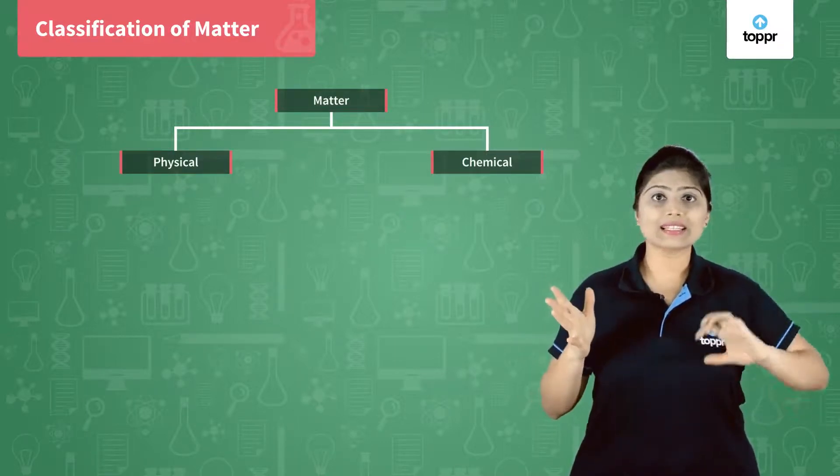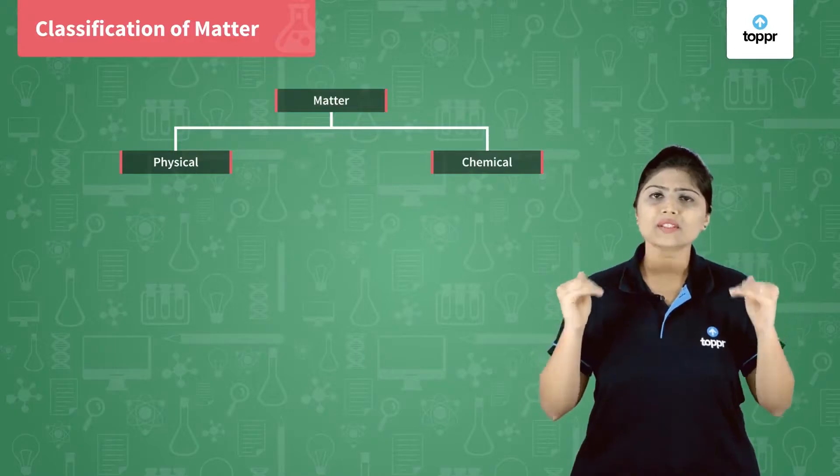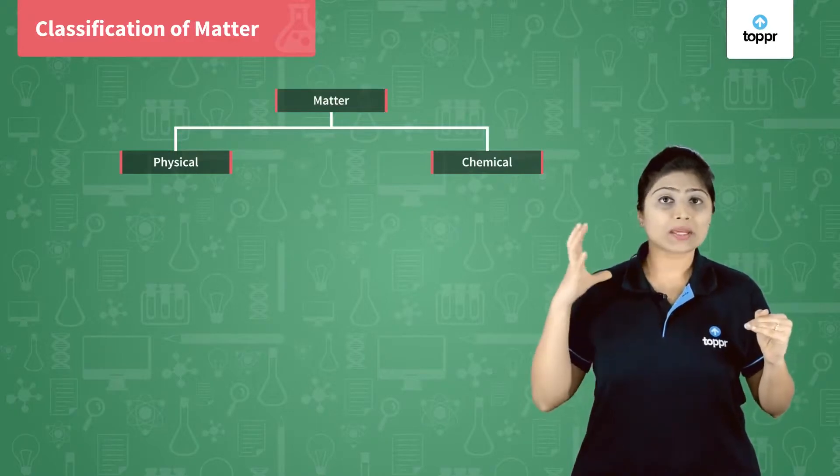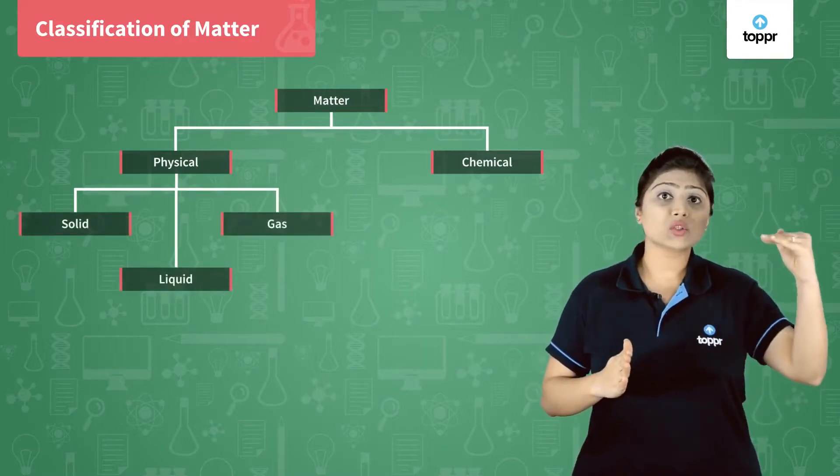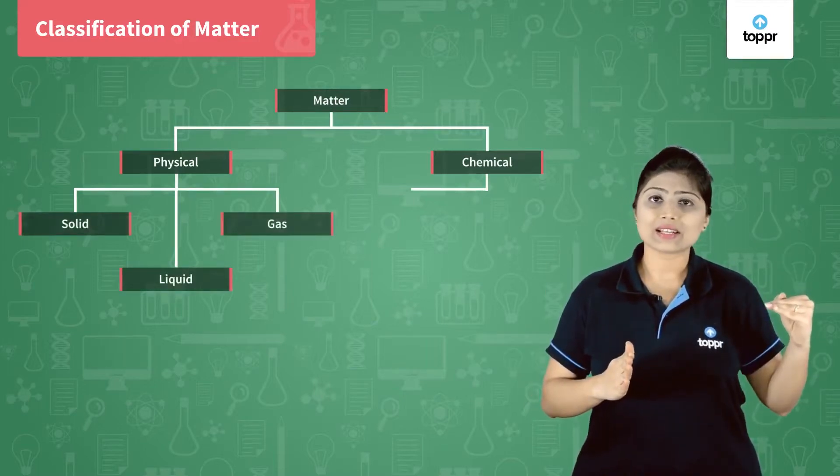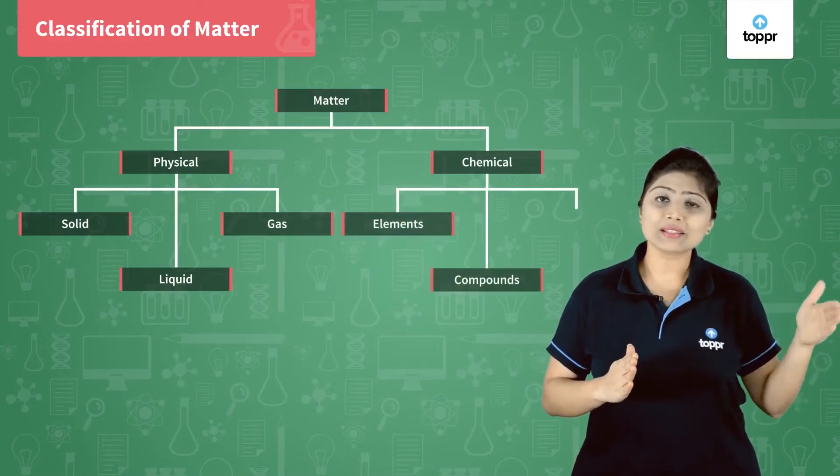So based on the physical and chemical properties, matter was further classified as: on the basis of physical properties it is classified as solid, liquid and gas, and based on the chemical property it is classified as elements, compounds and mixtures.